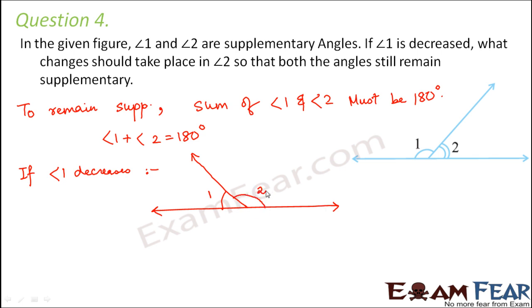So what has happened to angle 2? If angle 1 decreases, then angle 2 has to increase. If we want to maintain the sum to be 180 degrees, angle 2 will have to increase.